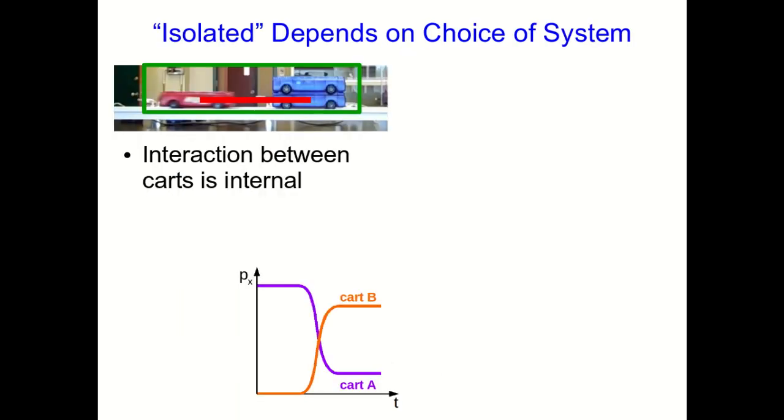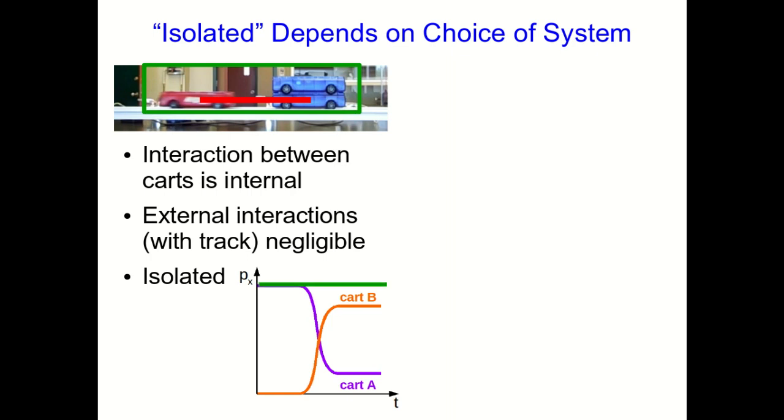Remember that how we choose our system is a choice. So let's think about that choice for the carts. Remember that the interaction between the carts is the only really strong interaction. So if we choose to put both carts in our system, then the only interaction that really matters is an internal one. And so we have an isolated system. We've already seen that in this case, experimentally, the momentum of the system as a whole remains unchanged.